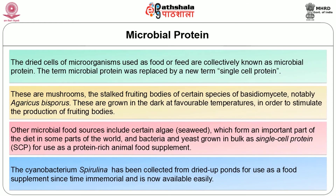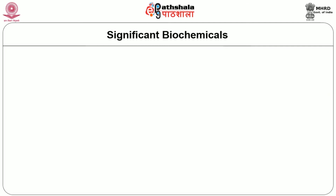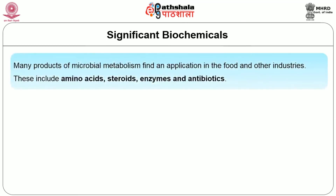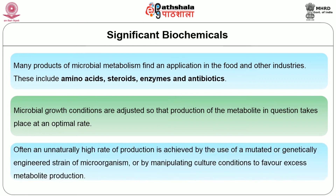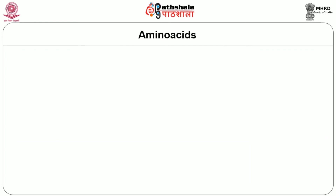The cyanobacterium Spirulina has been collected from dried-up ponds for use as a food supplement since time immemorial and is now widely available. Microorganisms are also useful in the production of significant biochemicals. Many products of microbial metabolism find application in the food and other industries. These include amino acids, steroids, enzymes and antibiotics. Microbial growth conditions are adjusted so that production of the metabolite in question takes place at an optimal rate. Often an unnaturally high rate of production is achieved by the use of a mutated or genetically engineered strain of microorganism, or by manipulating the culture conditions to favor excess metabolite production.